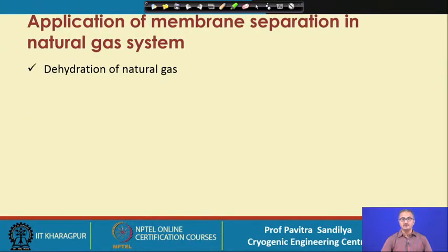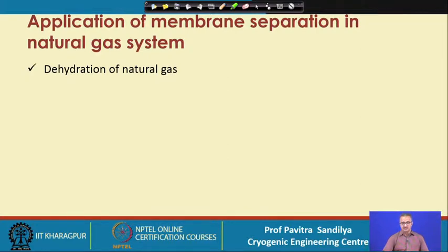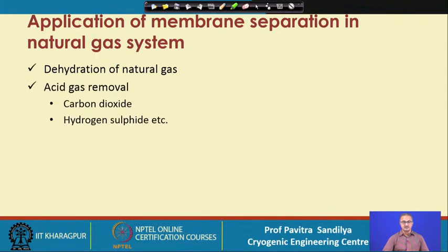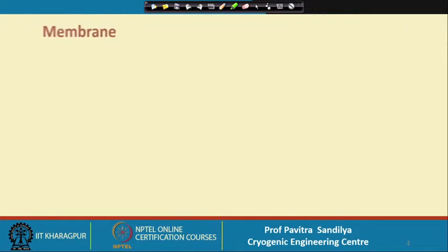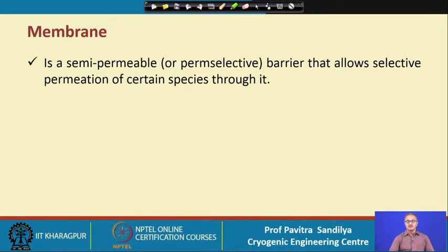Here we have some applications of membrane separation for natural gas processing: one is the dehydration of natural gas, then acid gas removal like carbon dioxide and hydrogen sulfide, and then the removal of nitrogen. First, let us define what a membrane is. A membrane is a semi-permeable, or perm-selective, barrier that allows the selective permeation of certain species through it.